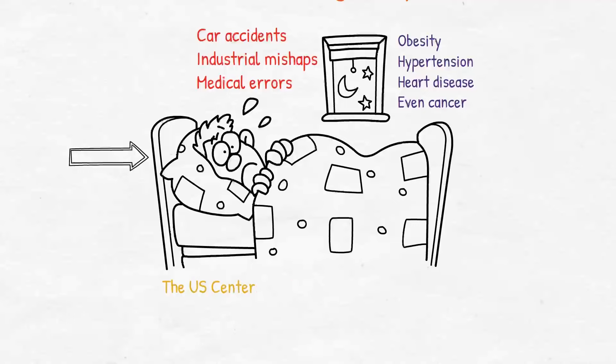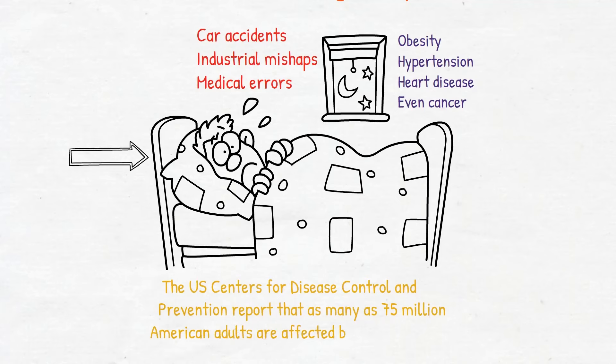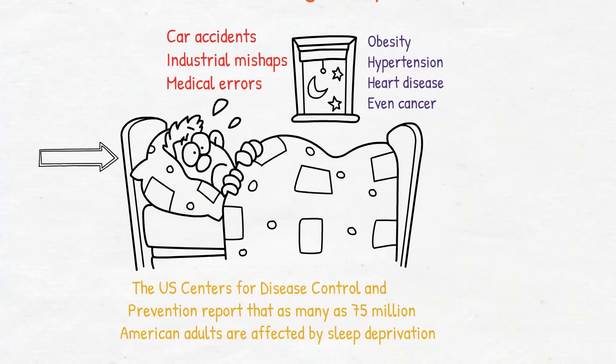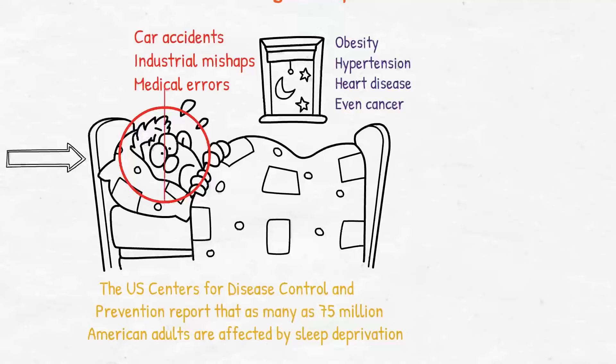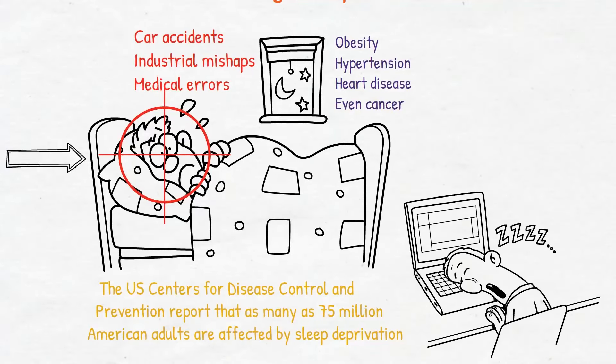The U.S. Centers for Disease Control and Prevention report that as many as 75 million American adults are affected by sleep deprivation. And men experiencing sleep issues have double the risk of developing prostate cancer compared to those who sleep well. And as for children, not getting enough sleep often results in poor school performance.